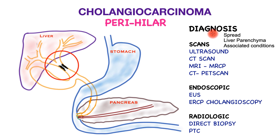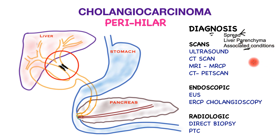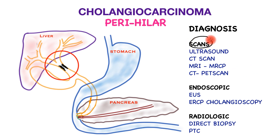The primary purpose of diagnosis is to establish and confirm perihilar cholangiocarcinoma; secondarily to assess its spread — radial, linear, and metastatic — to assess the liver parenchyma, and to identify associated conditions such as PSC and their extent. Scans play a huge part in assessing the condition.